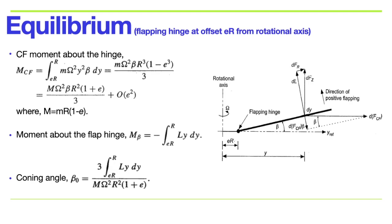The important point to remember is that the coning angle increases in proportion to rotor thrust and decreases inversely with centrifugal force. In other words, increasing either blade mass or rotor speed will decrease the coning angle. The coning angle can also be defined as the ratio of blade lift to the centrifugal force.